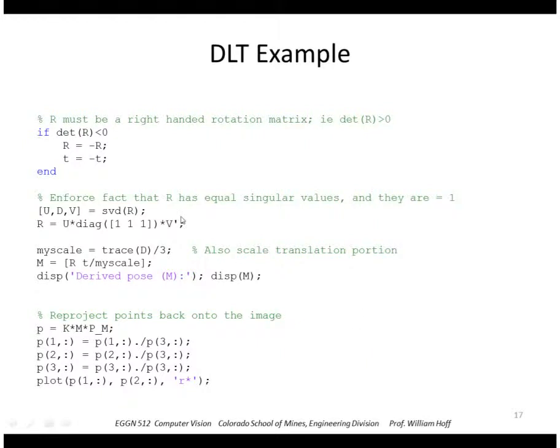So this is how that looks in MATLAB. This checks to see if the determinant is less than zero. If it is, we flip R. We also have to flip T because it's also part of that same matrix that this came from.